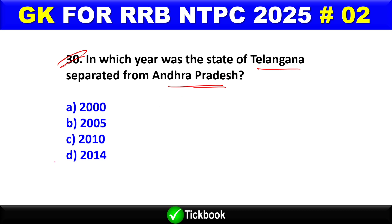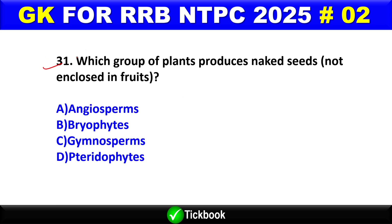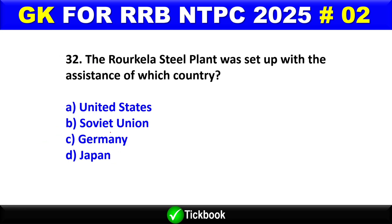Question number 31: Which group of plants produces naked seeds not enclosed in fruits? Option C is the right answer — gymnosperms.